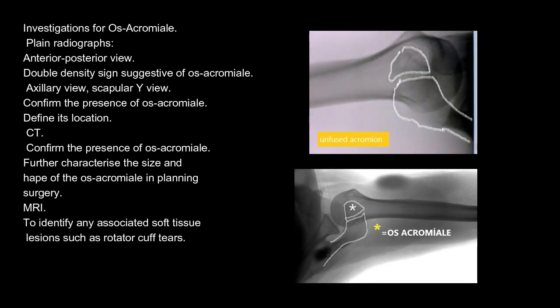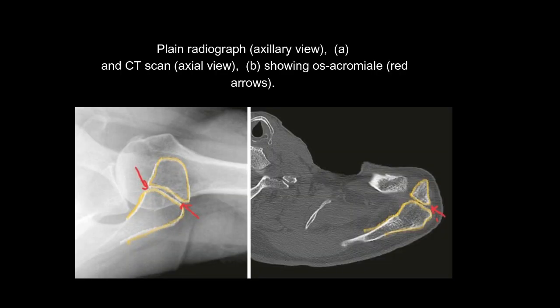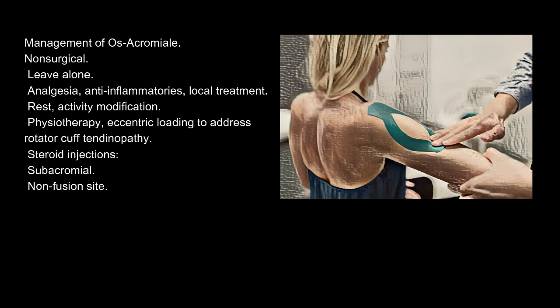Investigations for os acromiale: plain radiographs — the anteroposterior view may show a double density sign suggestive of os acromiale; the axillary view and scapular Y view confirm its presence and define its location. CT scan further characterizes the size and shape of the os acromiale and aids surgical planning. MRI is used to identify any associated soft tissue lesions such as rotator cuff tears. A plane radiograph axillary view and CT scan axial view showing os acromiale are indicated by red arrows.